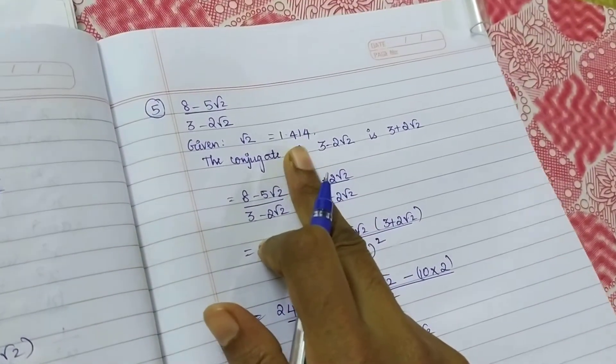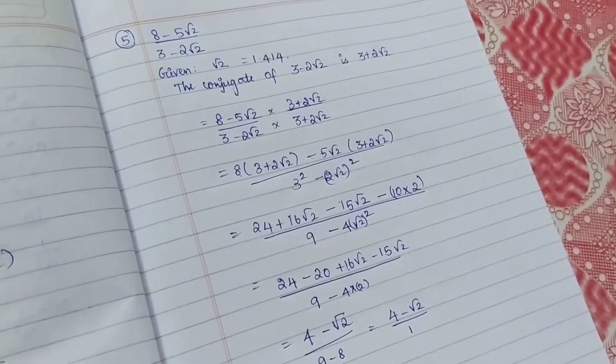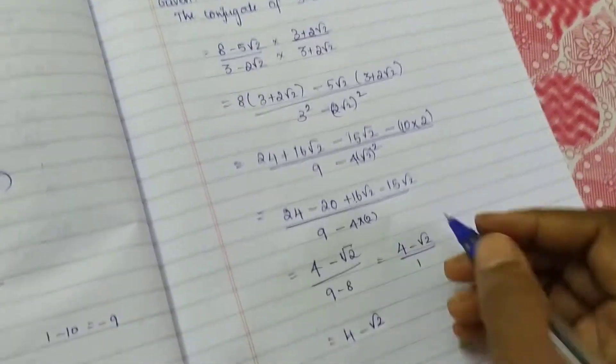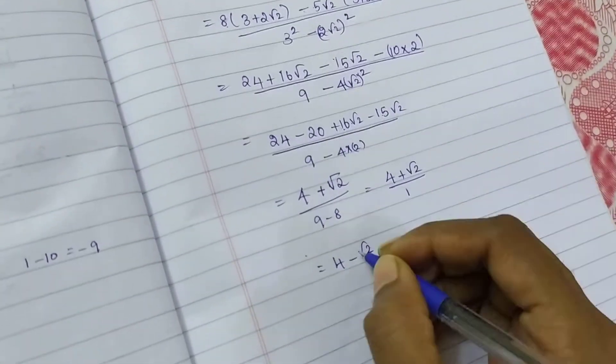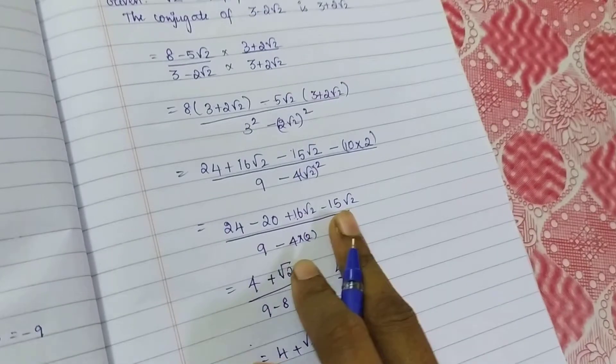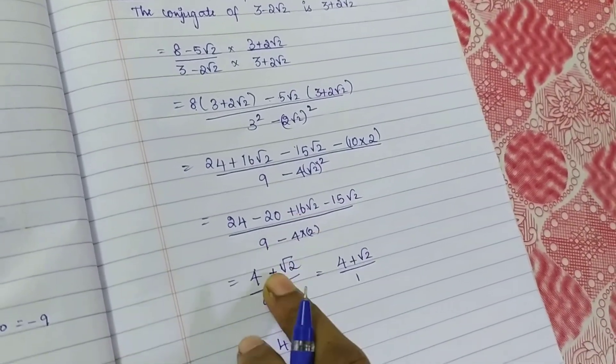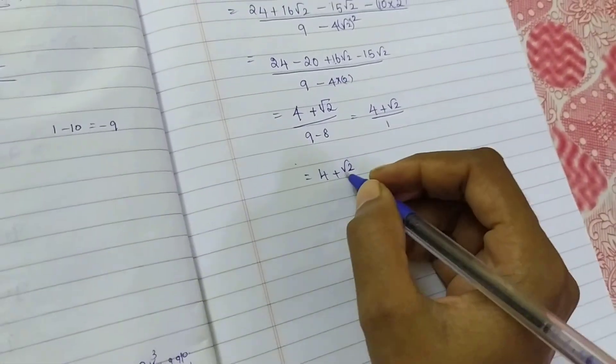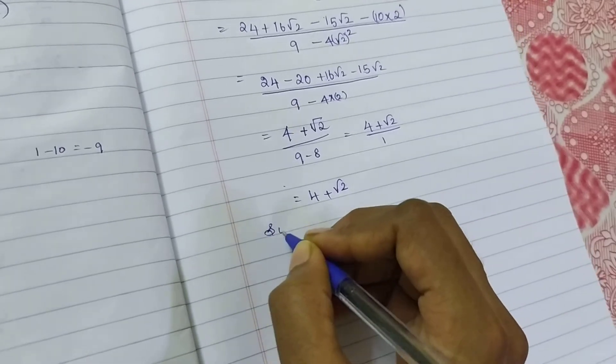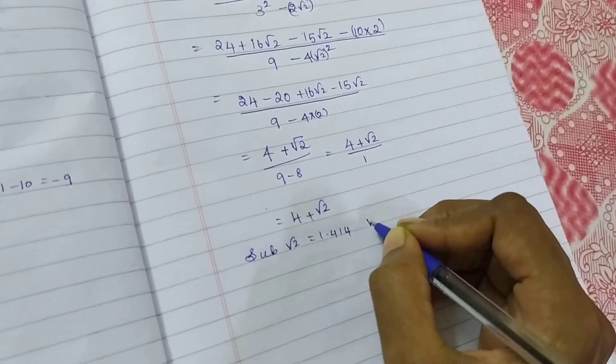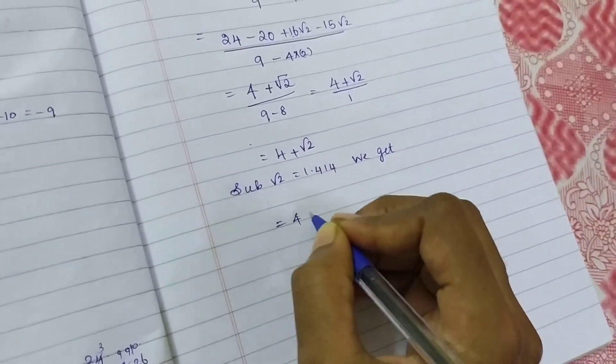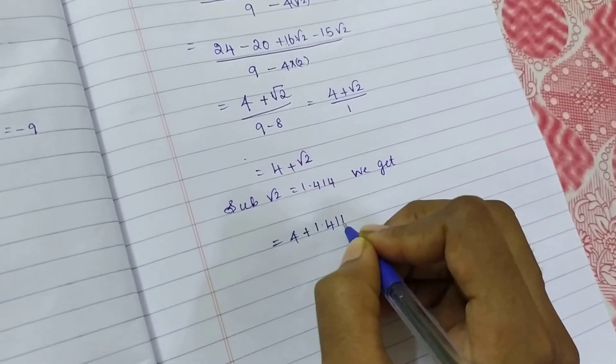What's my root 2 value? Sorry, in this place, a positive value is a plus. So plus value. If you are subtracting this, the value is 16, so positive. So I am having this. So what is my root 2 value? If you substitute root 2 equal to 1.414, we get 4 plus 1.414.